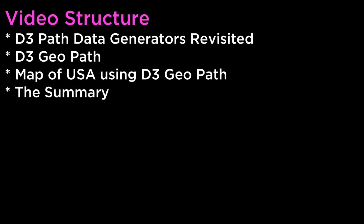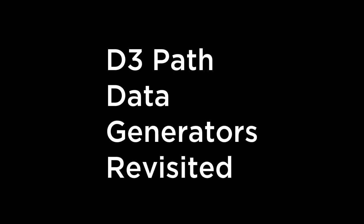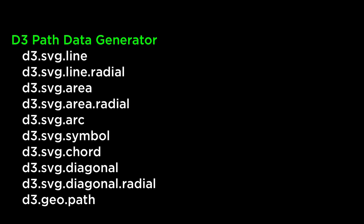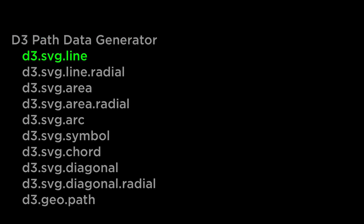Let's get started with D3 Path Data Generators Revisited. D3 includes a set of Path Data Generator helper classes for generating SVG Path instructions. D3 helps with things as simple as a line, and as complicated as arcs, chords, and diagonals. For now, we will only look at the D3 SVG Line Generator. This function takes in the data and generates the necessary SVG Path commands.